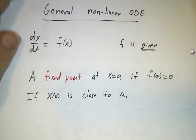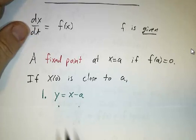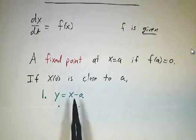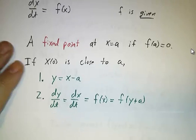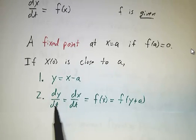If instead of starting at x = a, you start close by, you let y be the difference between x and a, and you approximate your equation, dy/dt is dx/dt.